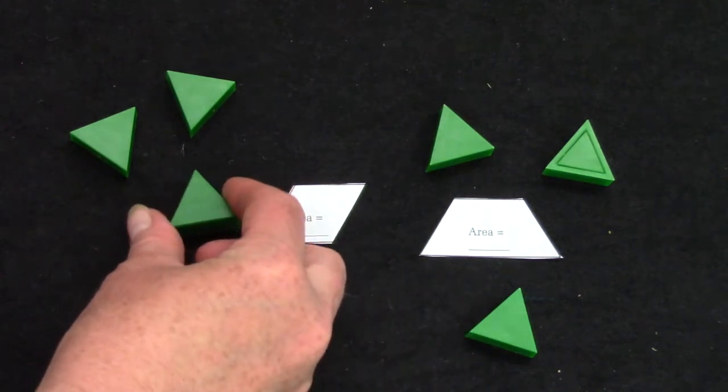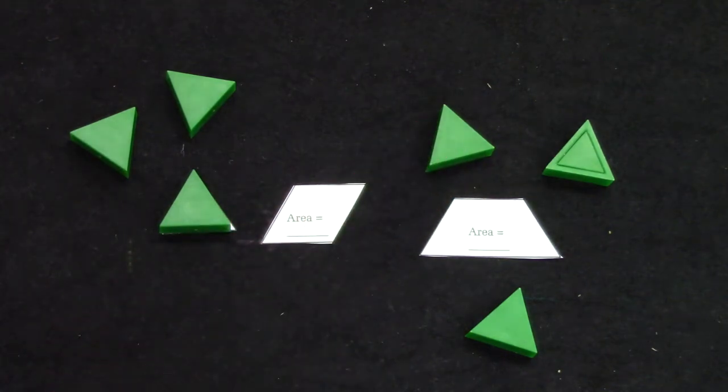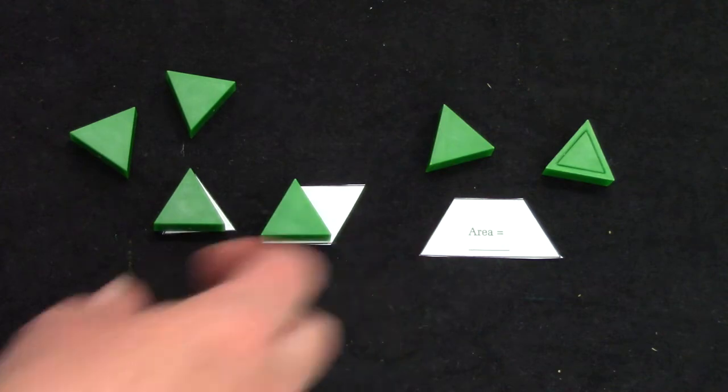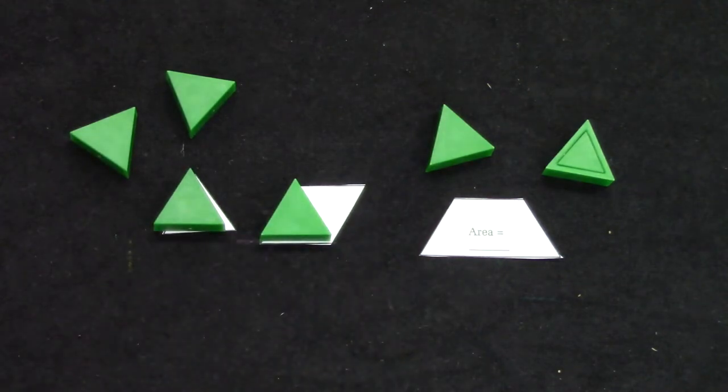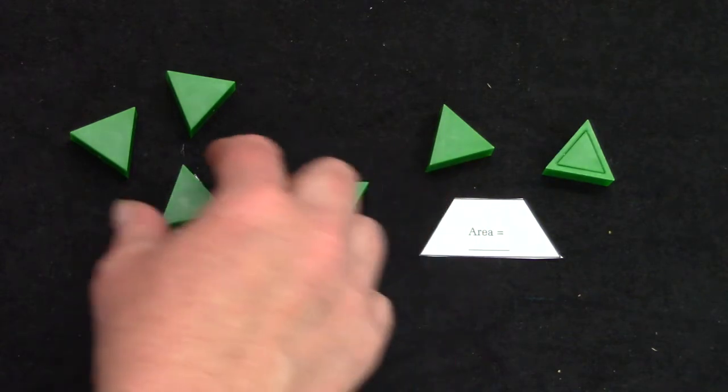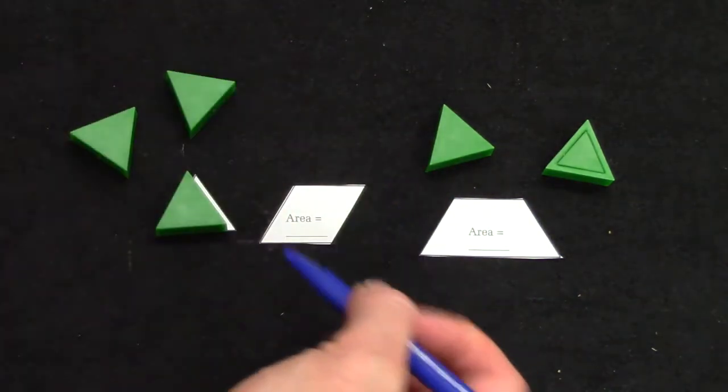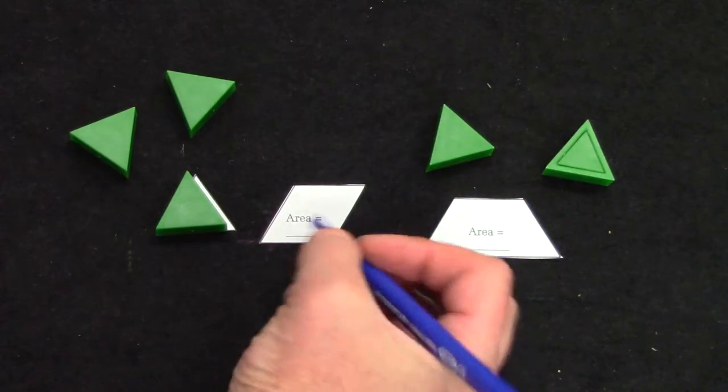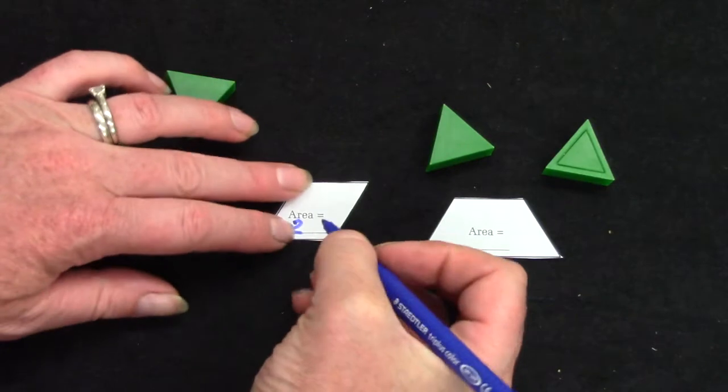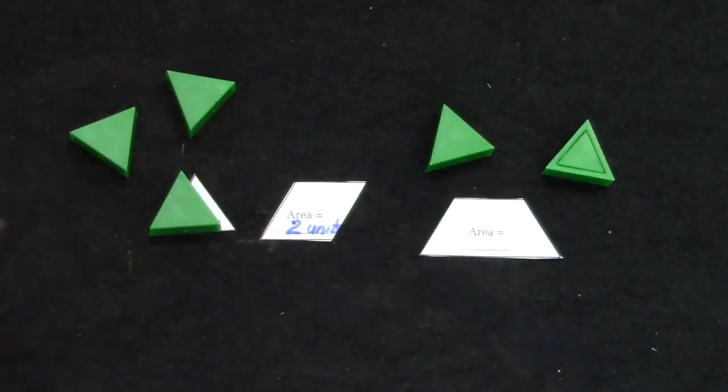So on our first one we can cover that with one unit. But this next one here, let's see, can we cover it with just one? No. What about two? Yes. I'm going to use my marker and here where it says area equals, I'm going to write down two units.